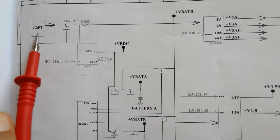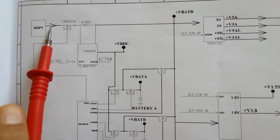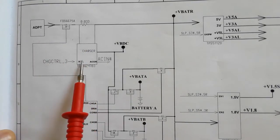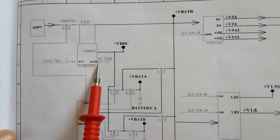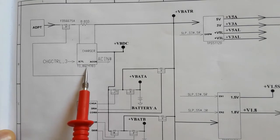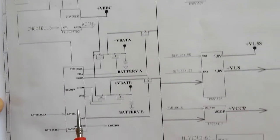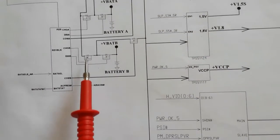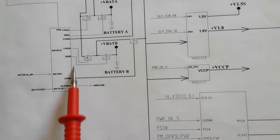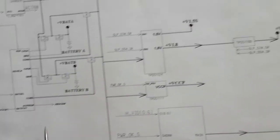This is the charge IC, as you can see. Here we have the BQ24703. This is a charge IC. Here, this is a MOSFET — this component means MOSFET. This is also part of the charge IC.